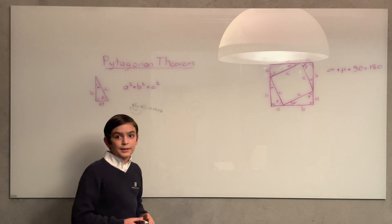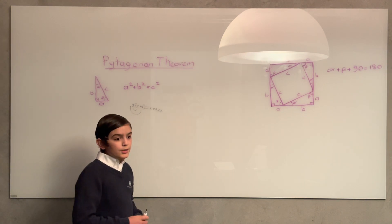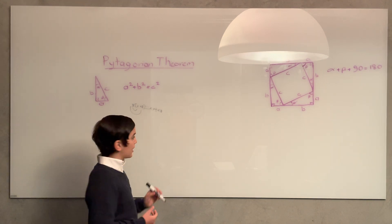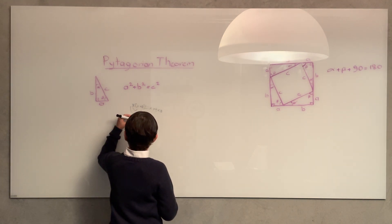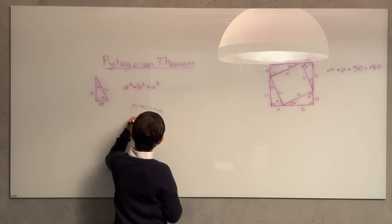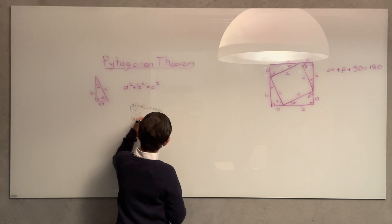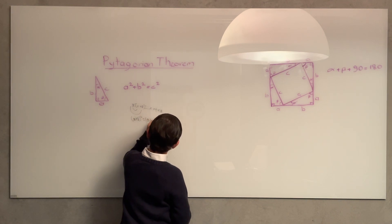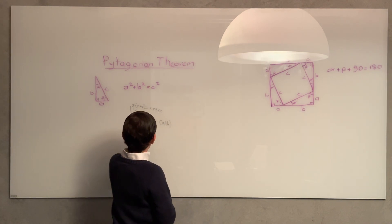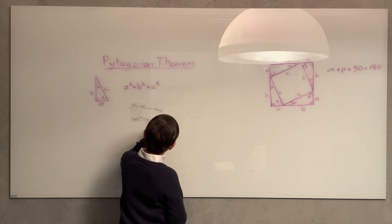Now, we're going to be applying the distributive property to (a + b)². (a + b)² equals (a + b) times (a + b). We're going to imagine (a + b) is x, a is y, and b is z.